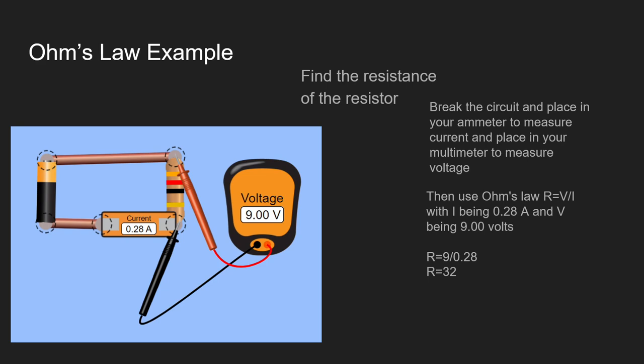Then we use Ohm's law modified to be R equals V over I with I being 2.8 amps or 0.28 amps, sorry. And V is equal to 9 volts.